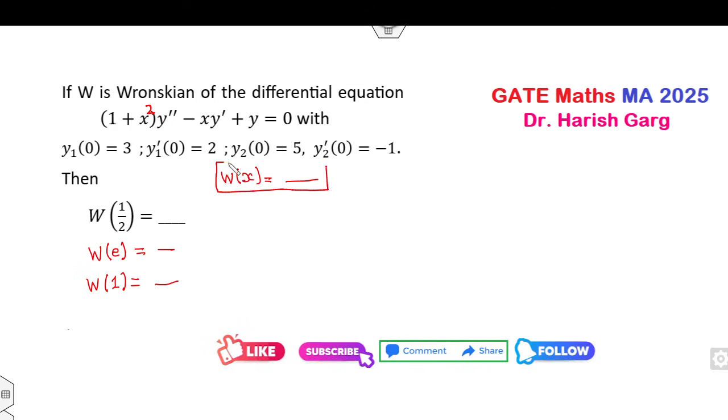So whatever the value of w they will ask, I will get the answer in terms of w of x. And then if they want to ask w of half you can substitute x is half. If they want w of e then you can substitute x is e and so on. As I mentioned you have to find Abel's formula. So Abel's formula is representing as w naught e raised to power minus coefficient of y dash divided by coefficient of y double dash.